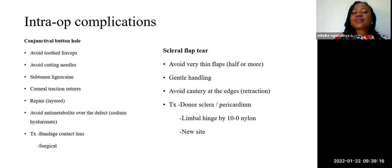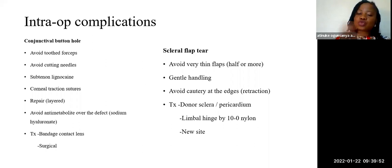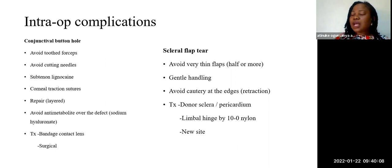Scleral flap tear is best avoided by gentle handling of the flap and avoiding a thin flap during dissection — the flap should be about half the scleral thickness. Avoid cutting through the edges of the flap to prevent traction. If a scleral flap tear occurs, you can use donor sclera or pericardium to replace or reinforce it to ensure the ostium is covered. You can also hinge a tongue flap at the limbus with a 10-0 suture, or proceed to a new site by repairing the torn flap and choosing another location.